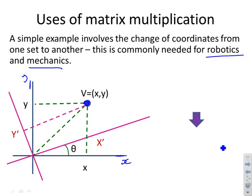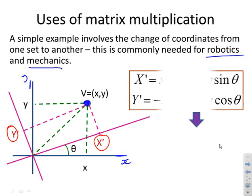These dotted lines represent the new x prime and this dotted line the new y prime. So x prime and y prime are the coordinates in the new rotated frame.